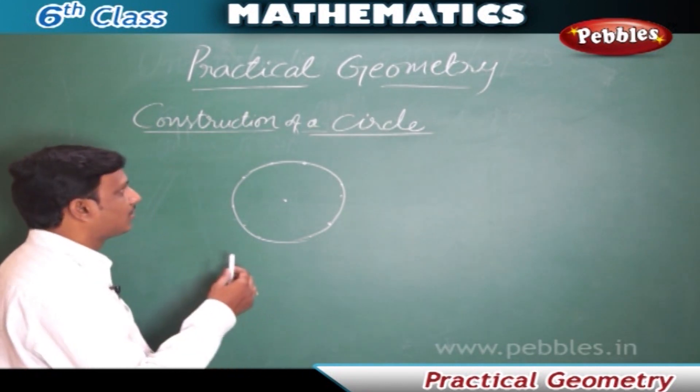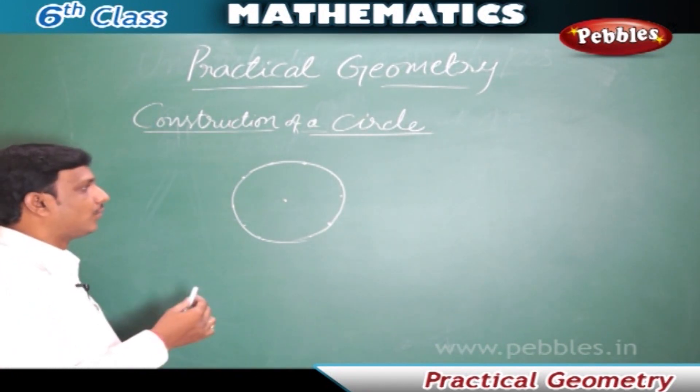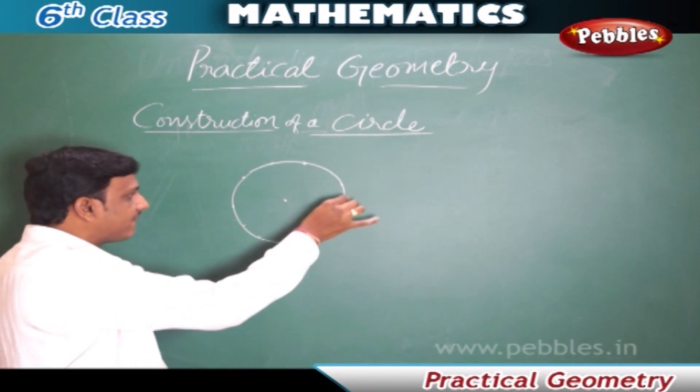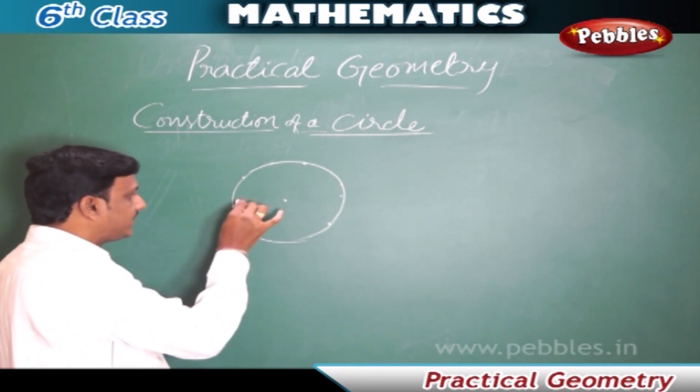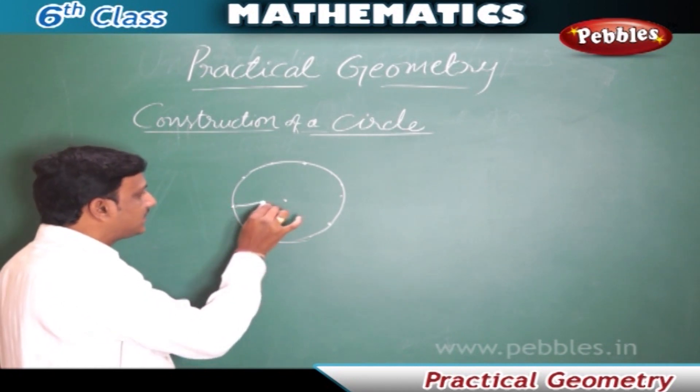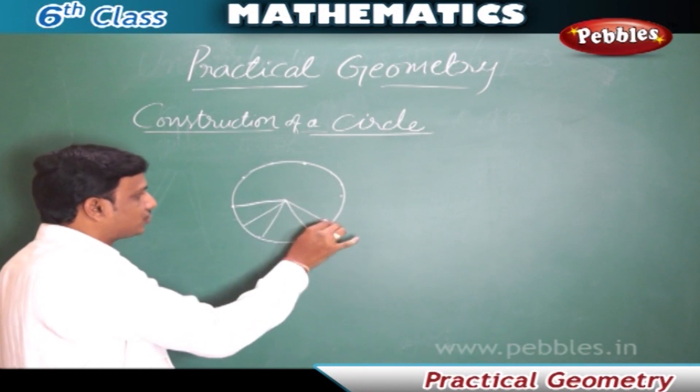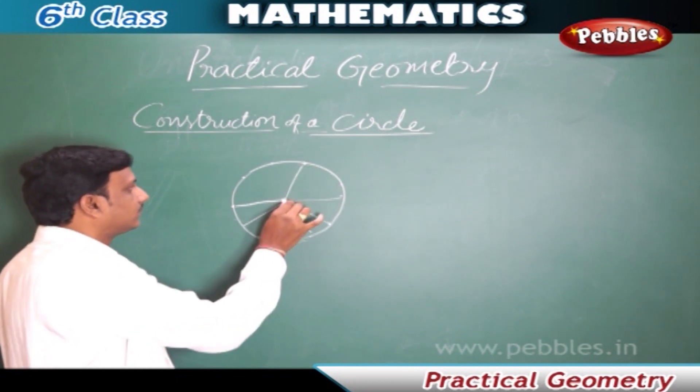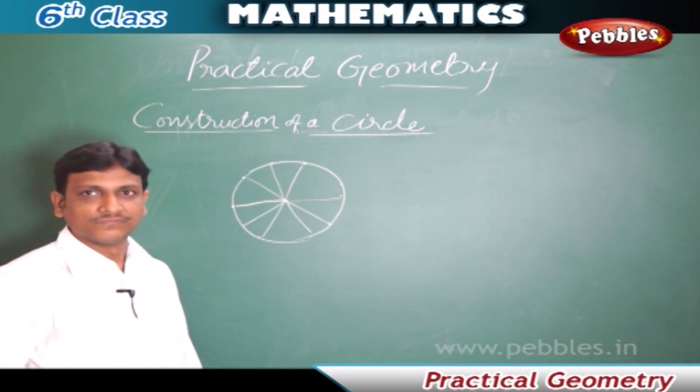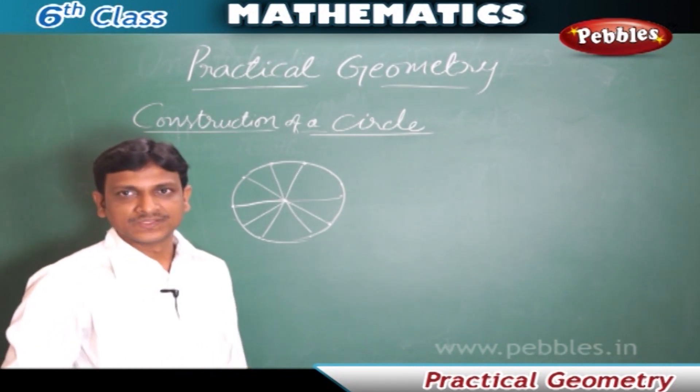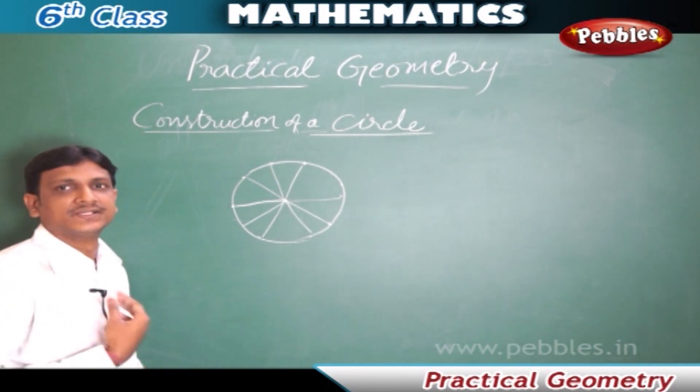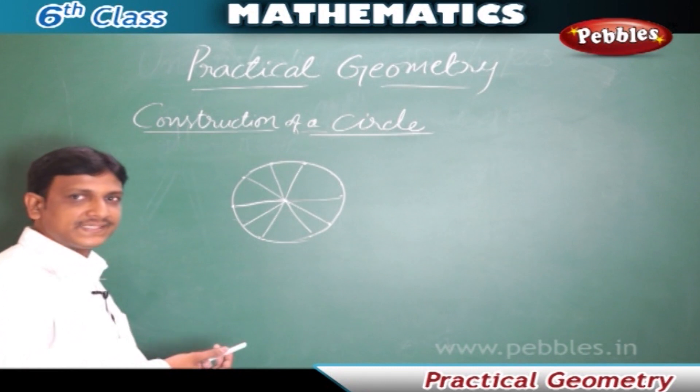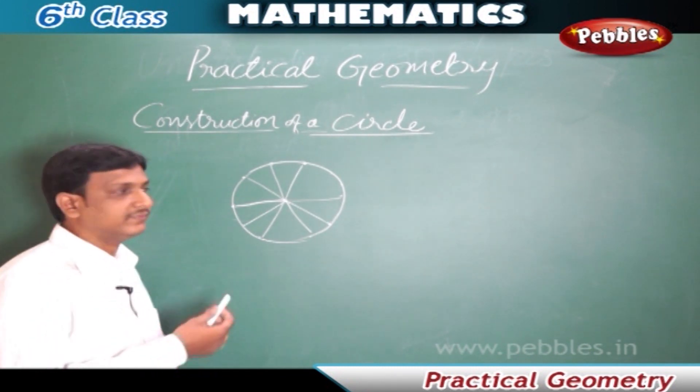Construction of a circle. We know what is a circle. In a circle, every point on its boundary is at an equal distance to its center. Such a geometrical shape is called a circle. For example, a wheel. Now let us see how to draw a circle with the desired radius.